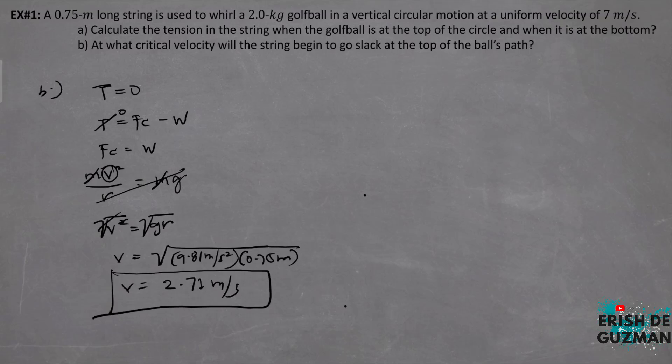If a velocity is lower than the critical velocity, the top of the ball's path will flatten out and will not be circular — the ball will leave the circular motion. This concludes example number one.